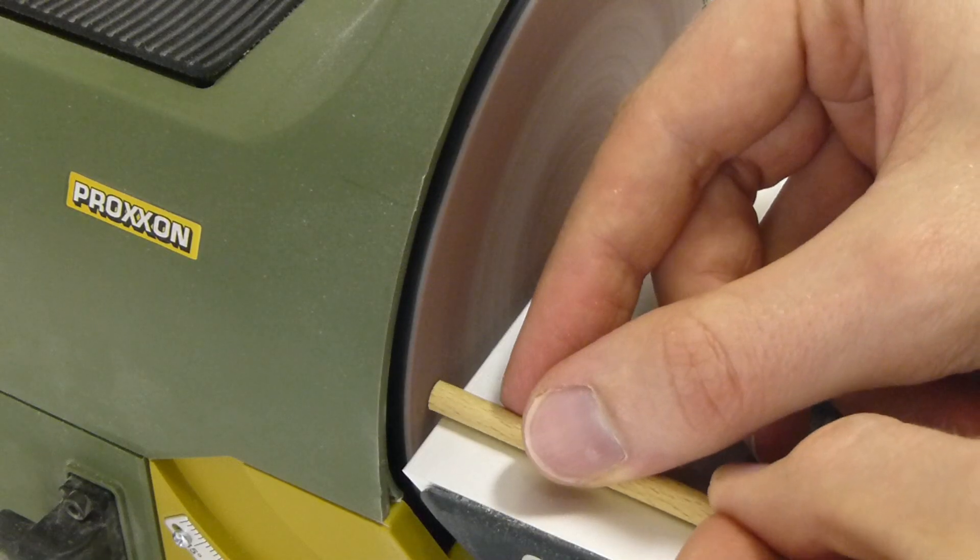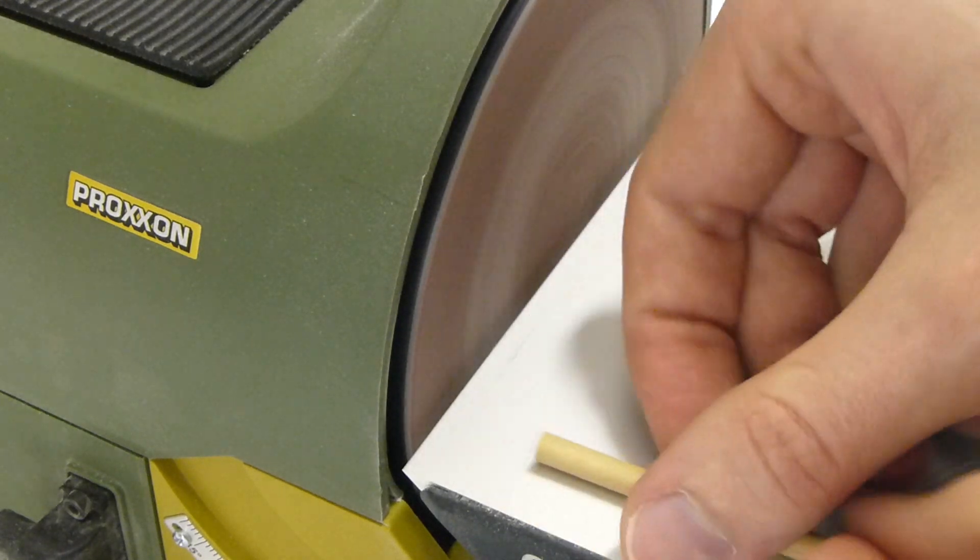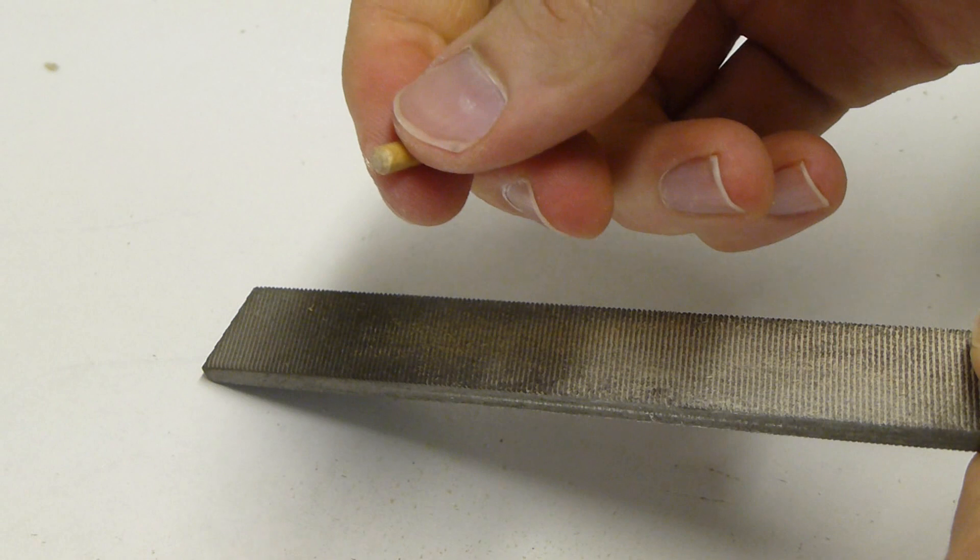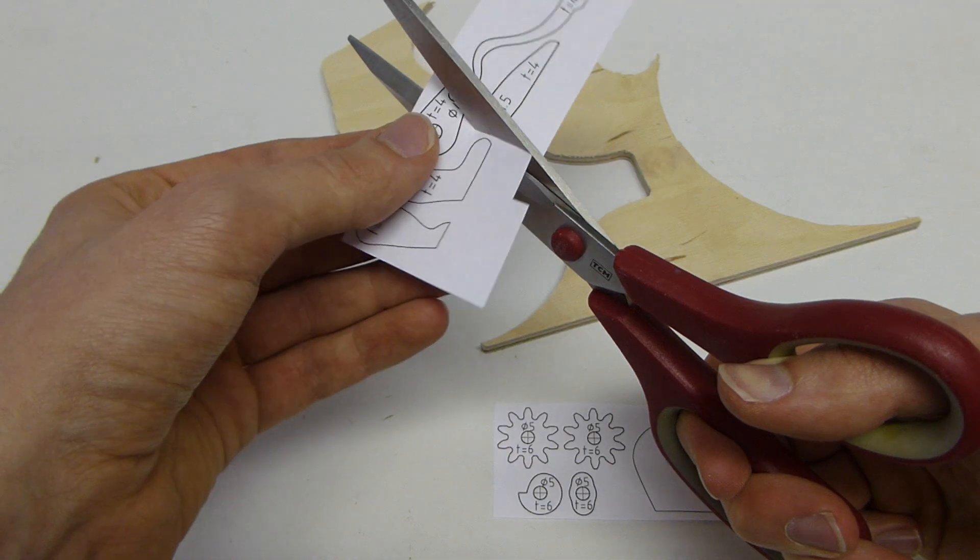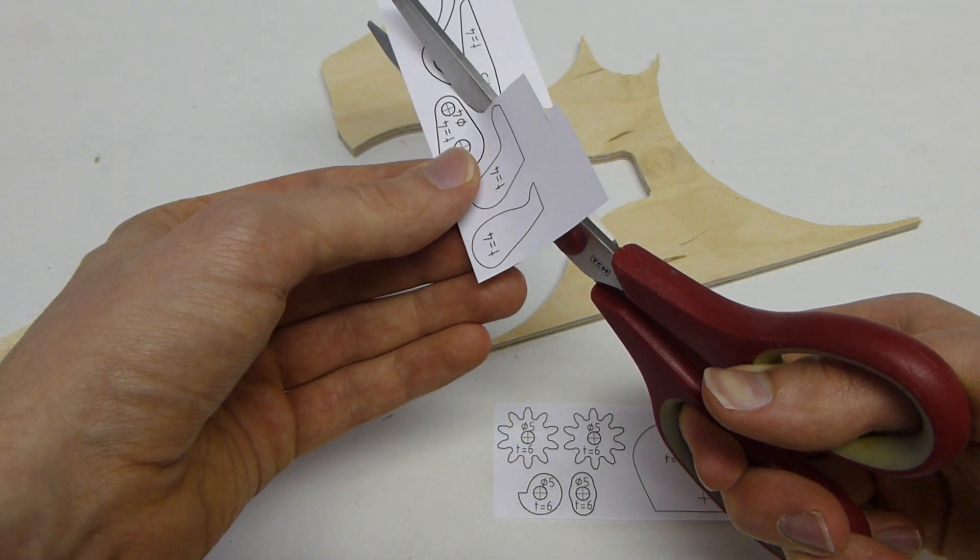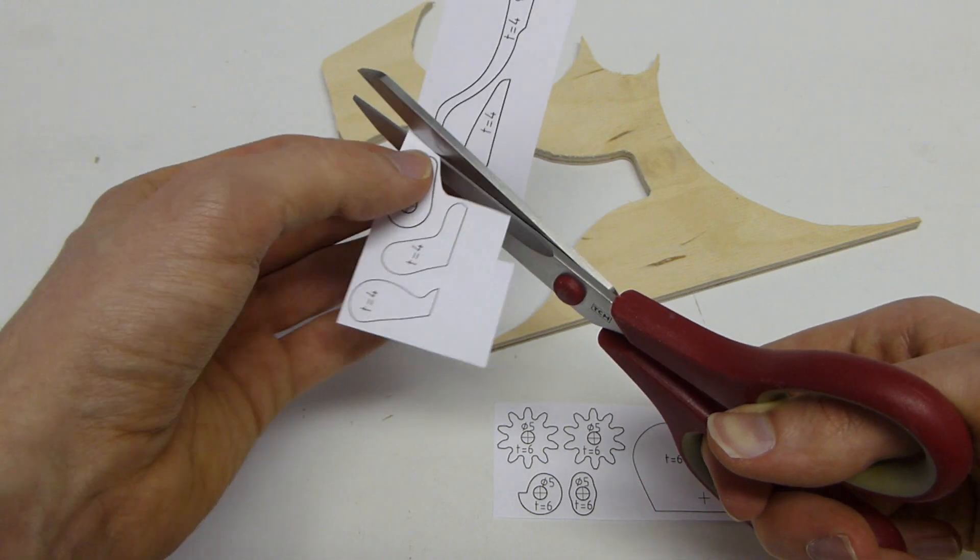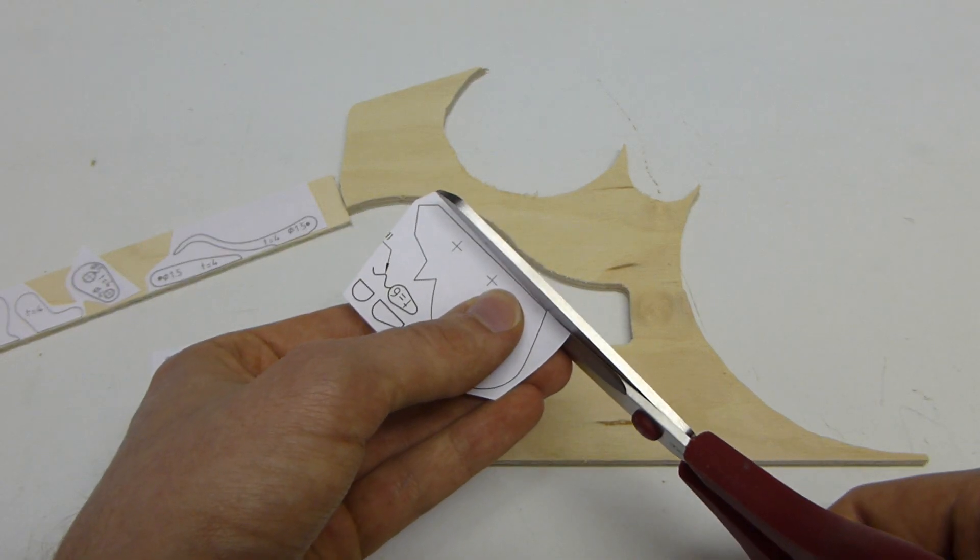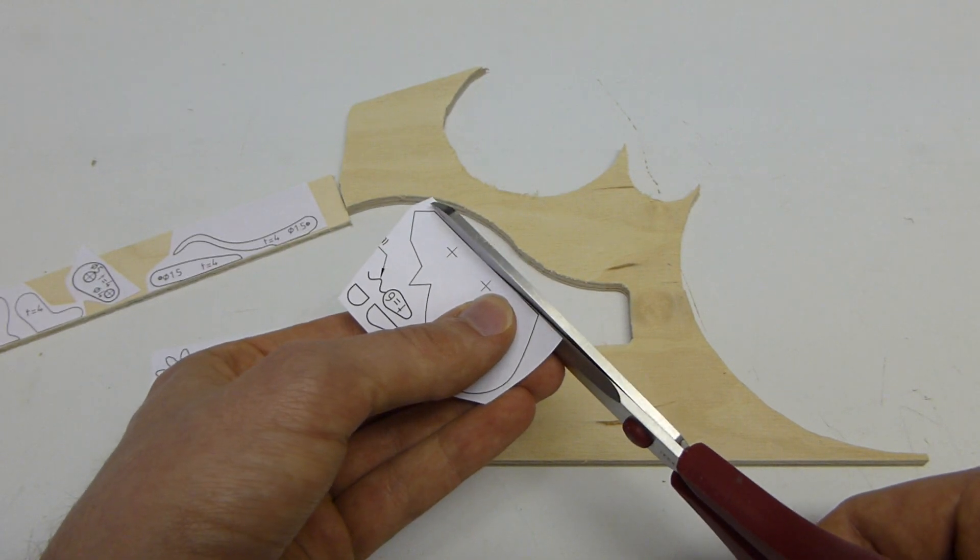Die Schnittflächen glatt schleifen und bei den beiden Übertragungsstäben die Enden abrunden. Zum Aussägen der restlichen Teile einfach die Zeichnung auf das Holz kleben. Bei diesem Projekt kann man sehr gut Holzreste verwerten.